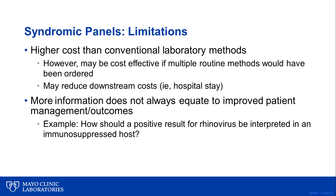Another issue to keep in mind with multiplex panels is that getting more information does not always equate to improved patient management or patient outcomes. One common example is the detection of viruses such as rhinovirus or coronavirus in certain patients, such as an immunosuppressed host. For some of the targets on commercial respiratory panels, there are no specific therapies available, so it is sometimes difficult to determine how to best manage a positive result.